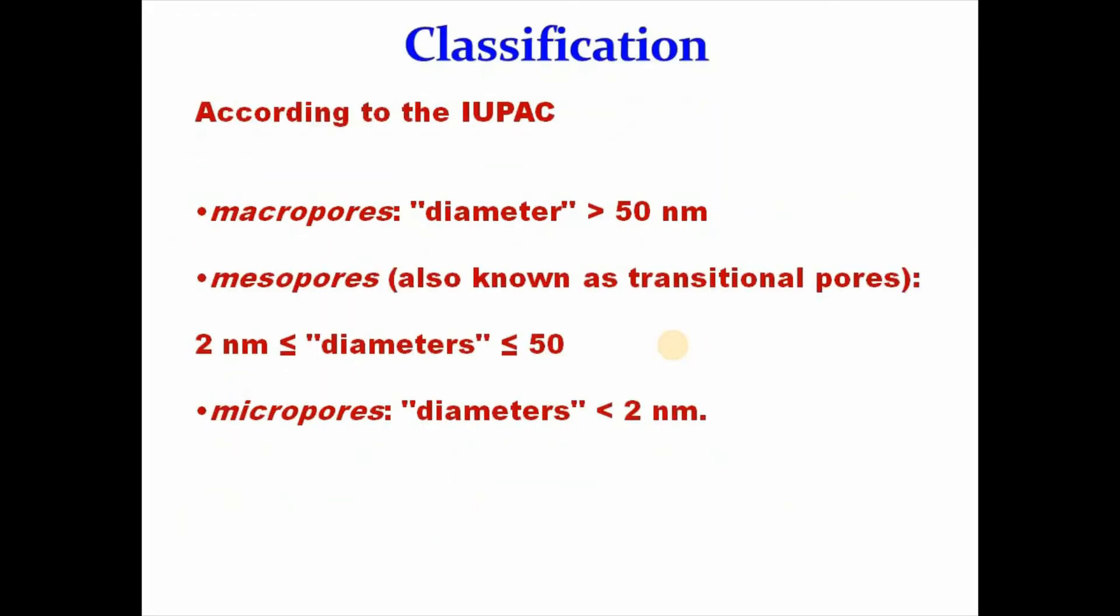Then comes classification of adsorbent. Based on IUPAC, adsorbents are classified into three types. One is macropores, where diameter is greater than 50 nanometers. Mesopores, it is also known as transitional pores, where diameters in the region of 2 to 50 nanometers. And micropores, where diameter is less than 2 nanometers.